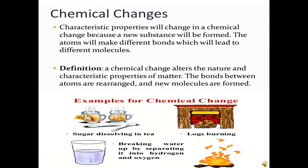What are the characteristics of chemical changes? Properties will change in a chemical change because a new substance is formed. The atoms make different bonds, leading to different molecules. By definition, a chemical change alters the nature and characteristic properties of matter — the bonds between atoms are rearranged and new molecules are formed.